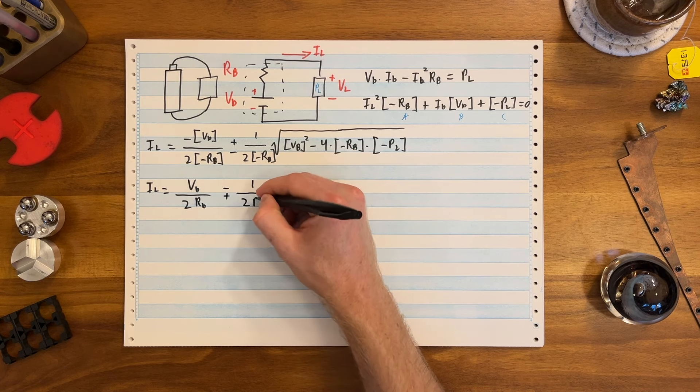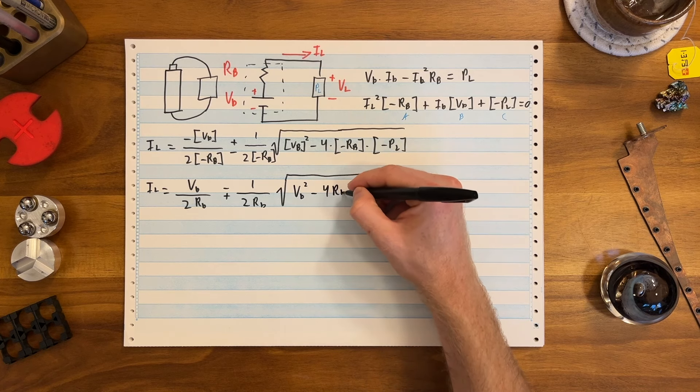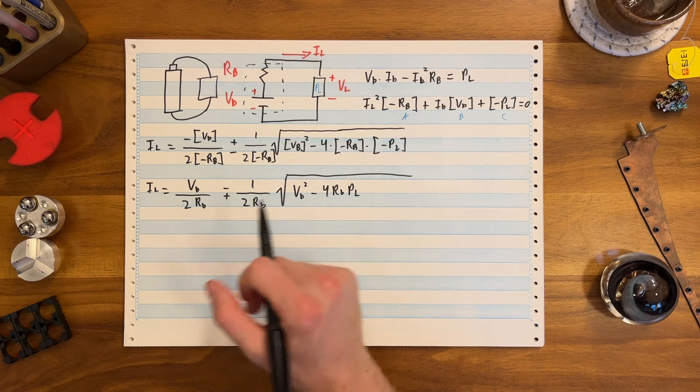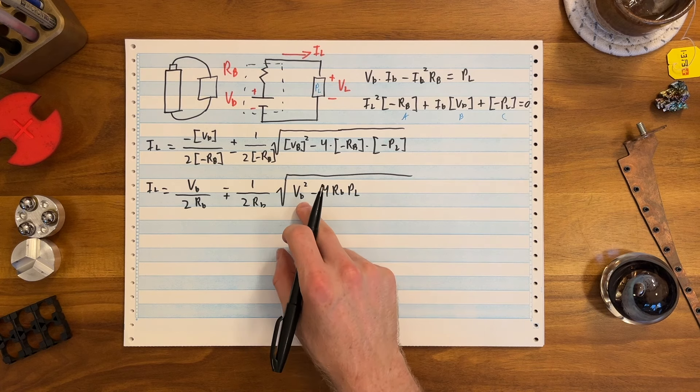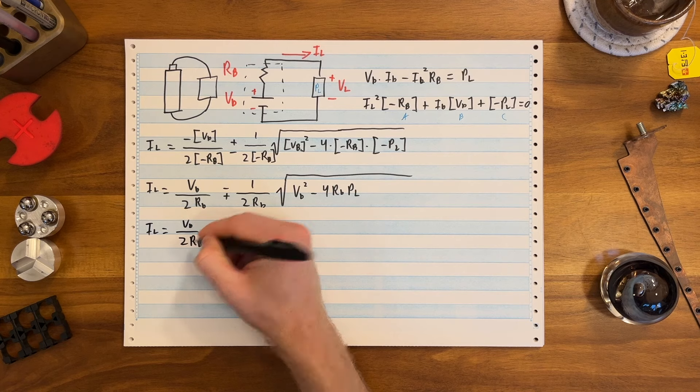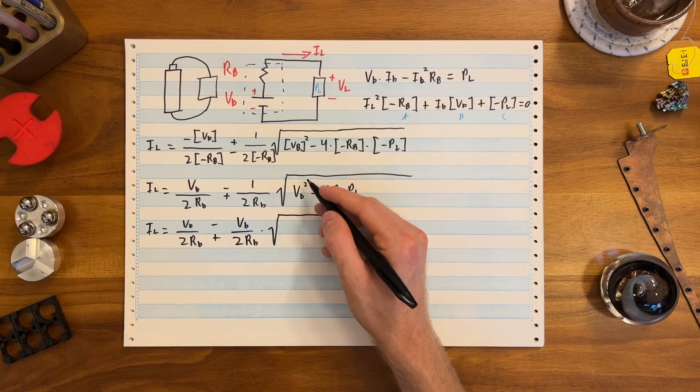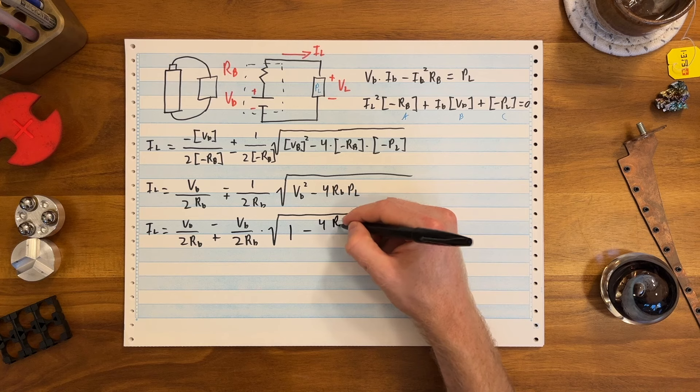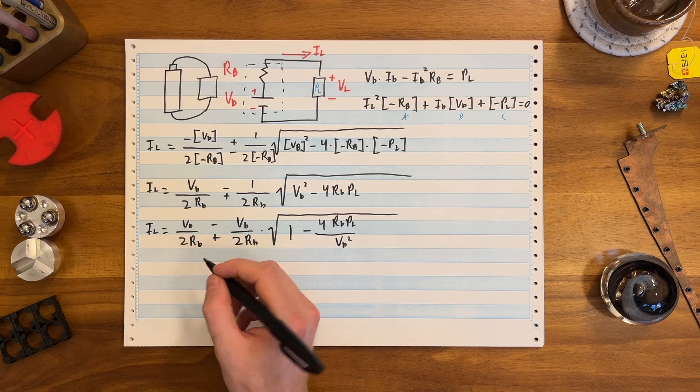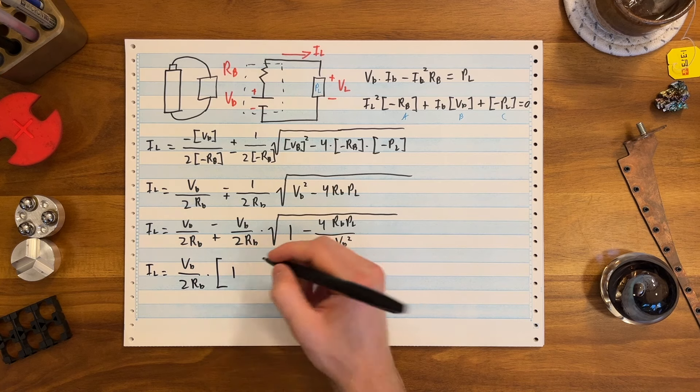Cool. We can simplify some terms. That's just VB over 2RB. The minus here spins up on top. We got a minus plus. I promise you that's a real thing. And inside the radical, you get VB squared minus 4RBPL. We want to move a few terms out because that VB squared is going to turn into a VB, which we can combine into these terms and simplify. So let's do a little bit of work here. And we're going to pull a VB out of the system. So we get IL load equals VB over 2RB minus plus VB over 2RB. How did I do that? Well, if I pull VB squared out, I just get a 1. And here I get a minus 4 over RBPL VB squared.